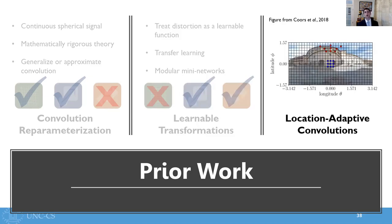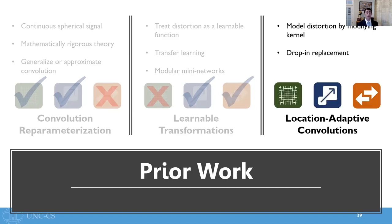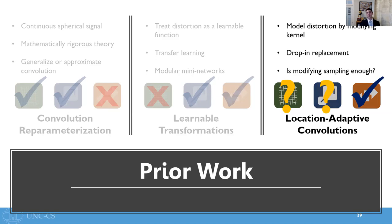Now the last category of prior work are location-adaptive convolution operations. These methods explicitly incorporate the distortion function by adapting where a convolutional kernel samples in a location-dependent way. These have been designed to be a drop-in replacement for 2D convolution, which makes them particularly transferable. But this approach raises the question whether modifying sampling goes far enough to fully address spherical distortion. It also raises the question if by modifying the convolutional kernel we're going to be able to scale as well as the efficient implementations of 2D convolution that we use in our central perspective networks.